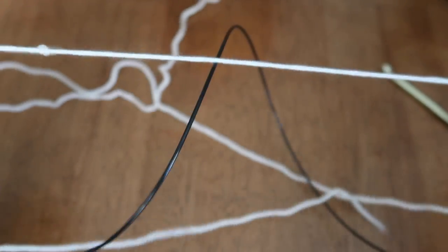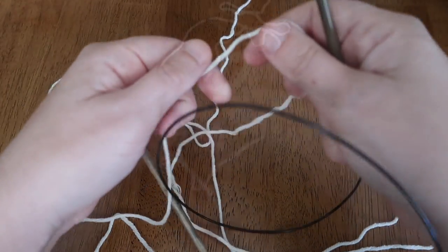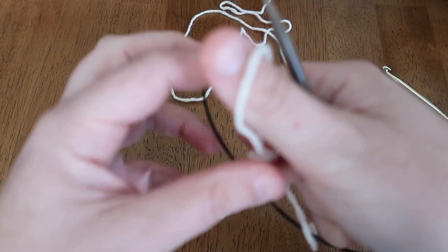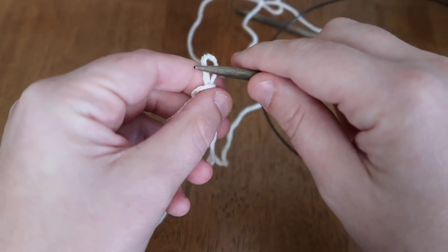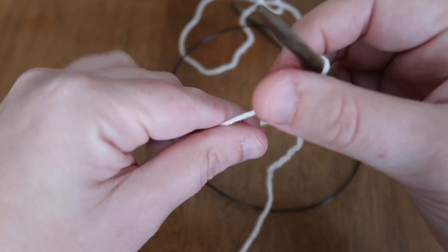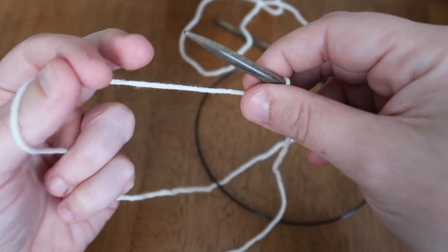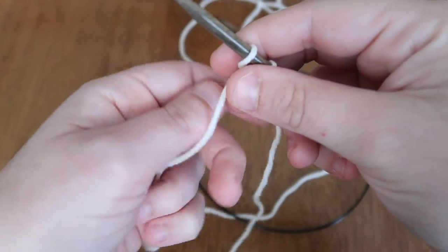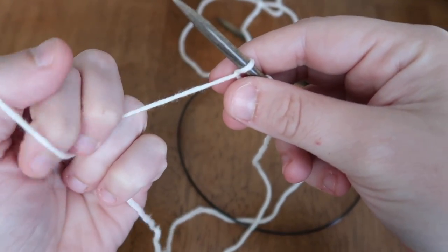Now, one of my other favorite types of a cast on is a backwards loop cast on. Here we're going to start with a slip knot, as we have for the knitted or crochet cast on. This time we're going to make a loop with our fingers and then place the loop onto the knitting needle. You want to make sure that the loose edge of your loop is on the inside.